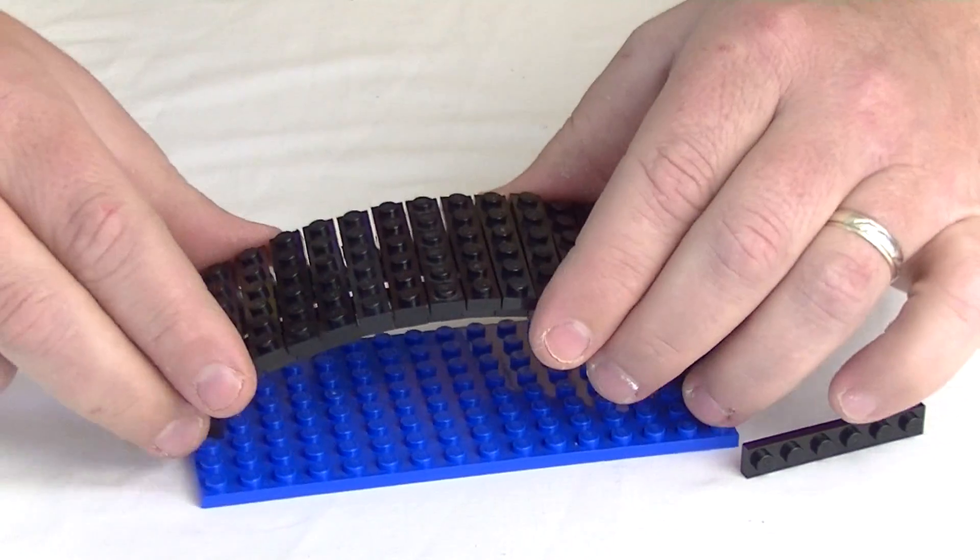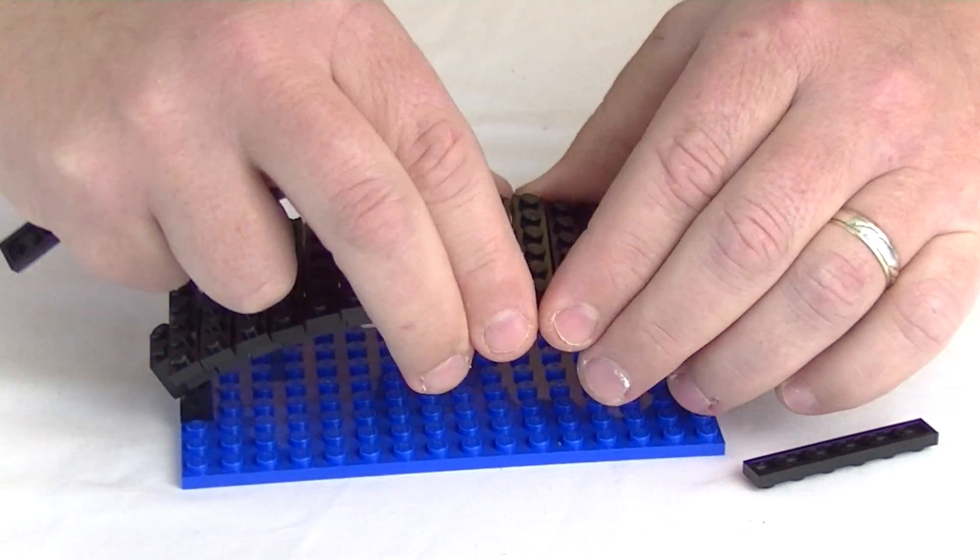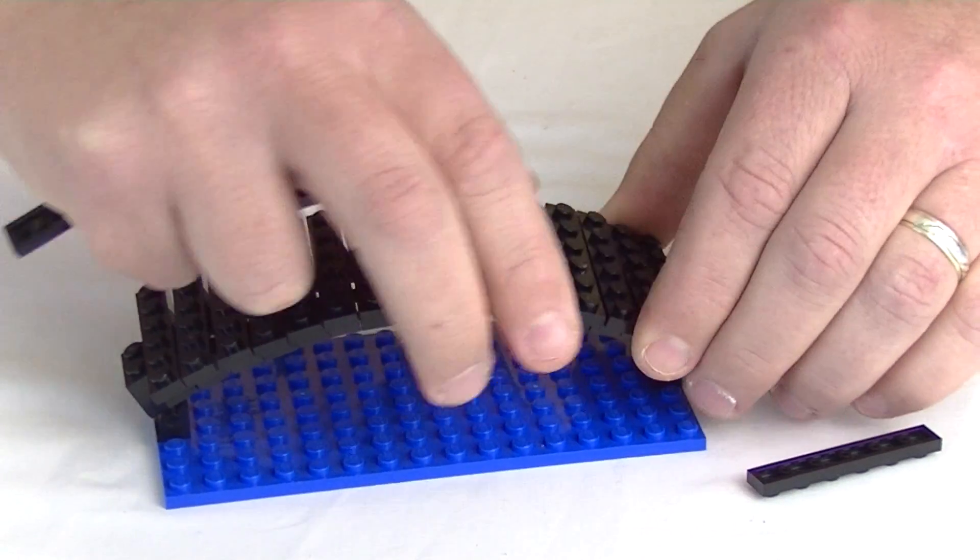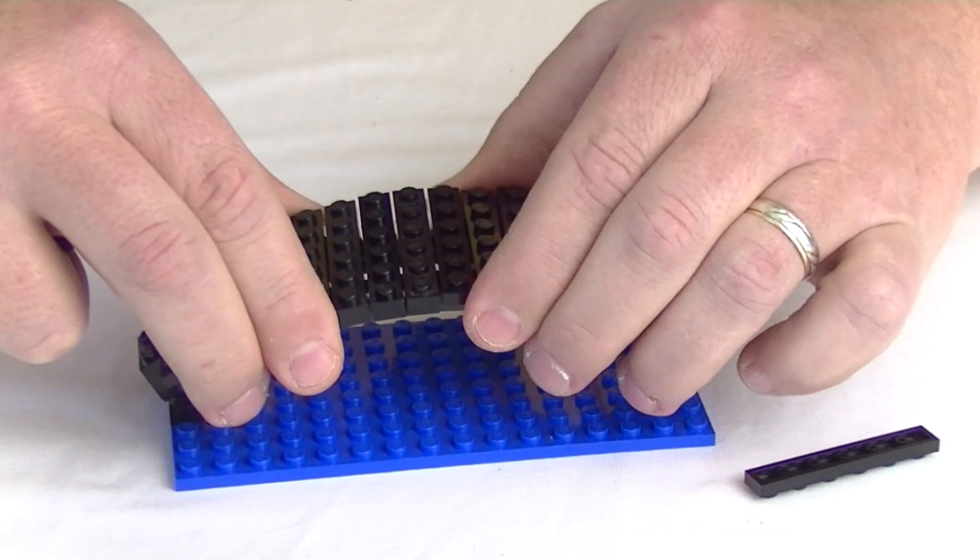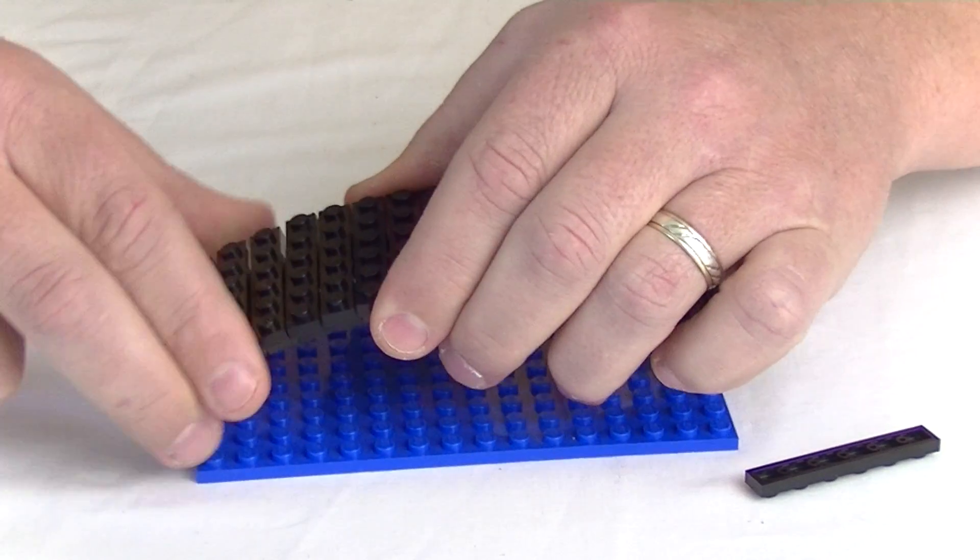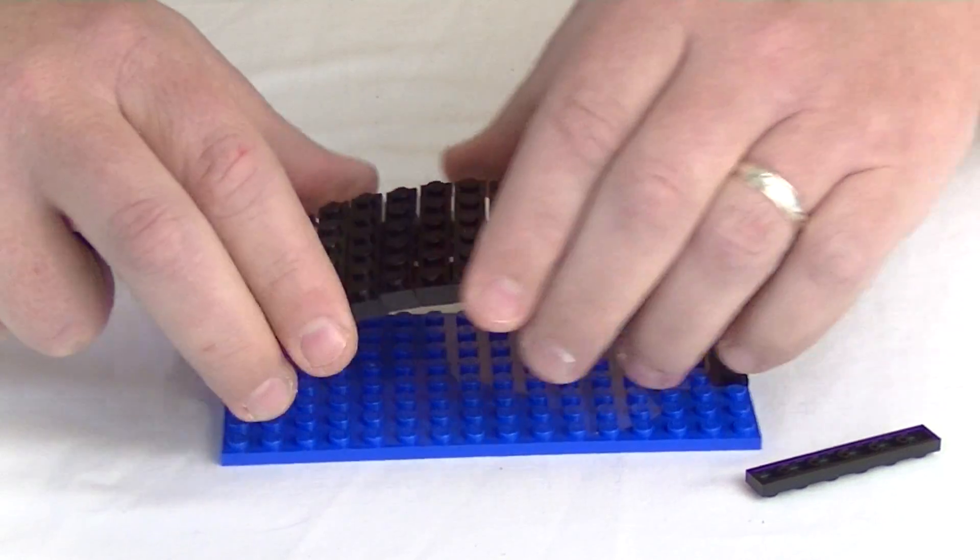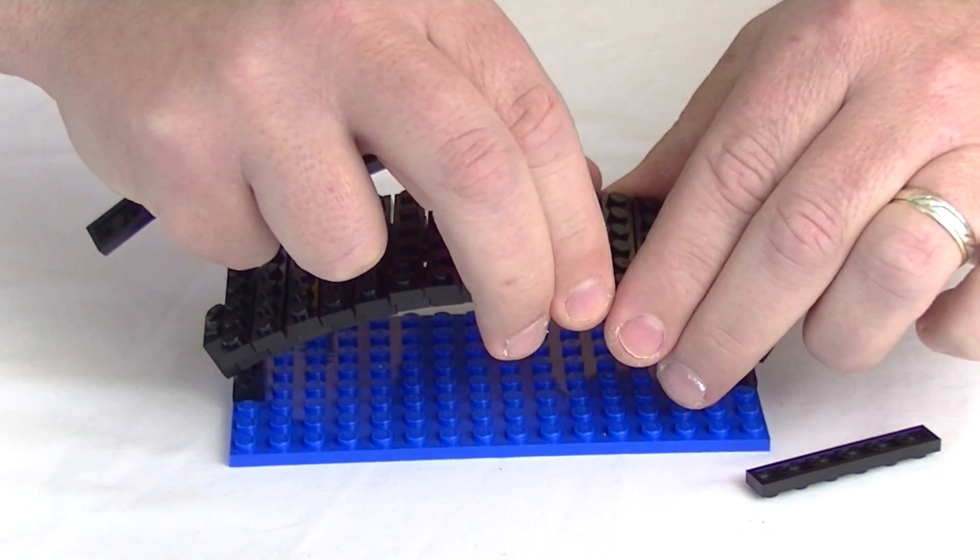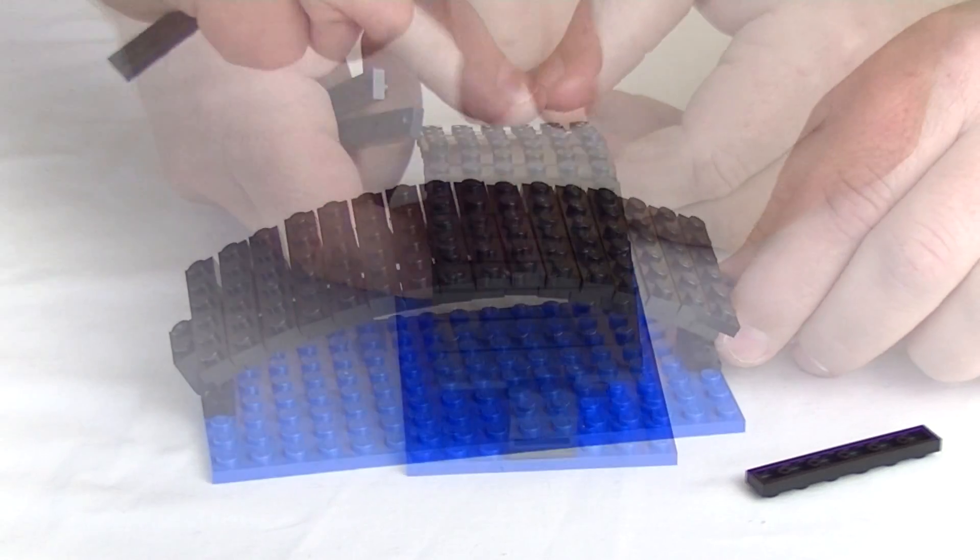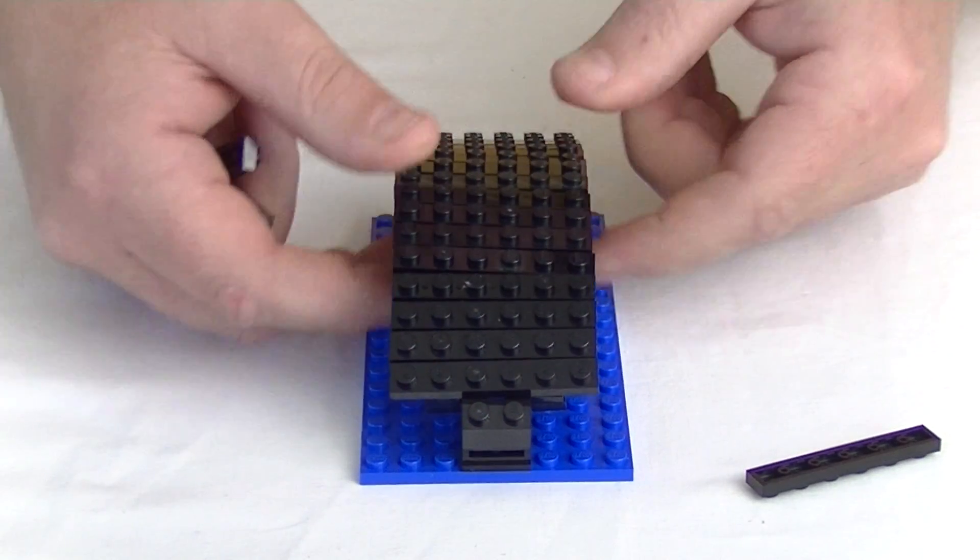Okay, all the one by six plates are on and it's still a little bit wonky. So you just have to spend a little bit of time just shaping it a little bit, making sure the spacing's correct. It's just a little bit of messing around just to get it right.